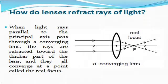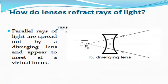How do lenses refract rays of light? When light rays parallel to the principal axis pass through a converging lens, the rays are refracted towards the thicker part of the lens, and they all converge at the point called the real focus. However, parallel rays of light are spread out by diverging lens, and appear to meet at the virtual focus.